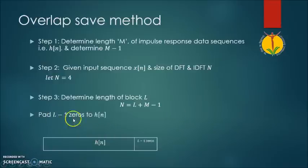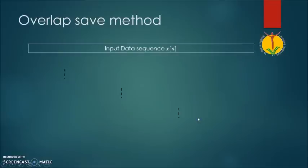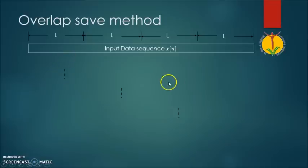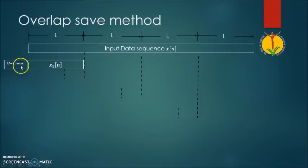In the next step, we have to add L-1 zeros to the sequence of the filter response. So this is the impulse response of the filter and we have to add L-1 zeros to this impulse response sequence. For the input data, we make blocks of size L. All blocks should have L number of samples. We are forming the first block x1, and we have to pad M-1 zeros before it, because we don't have any previous samples. So for the first block only, we add zeros.